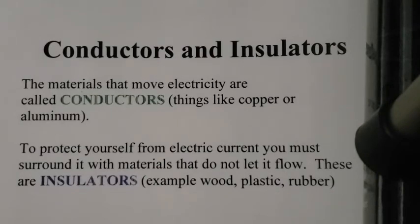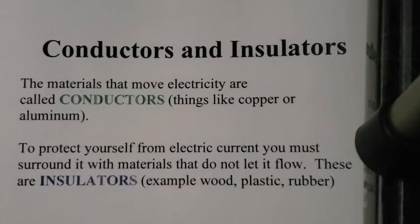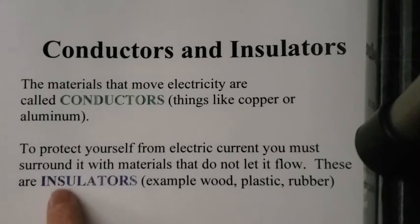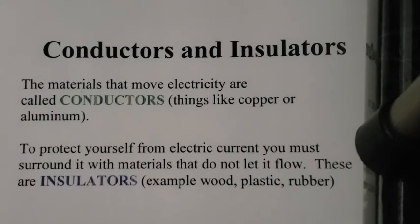If you look at any wire, what you see is there's a plastic coating on the outside and then metal on the inside. The inside is the conductor, which allows electrons to flow through it easily, and then we coat it in these materials called insulators so that if we touch the wire, we're not going to get electrocuted.